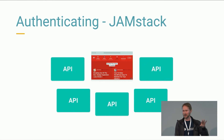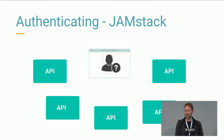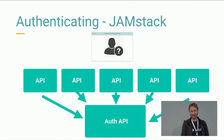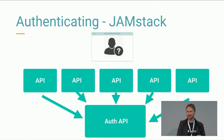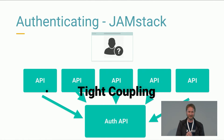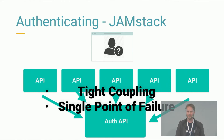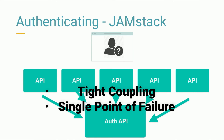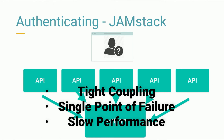The naive approach I've seen is to have all these APIs be aware of some central authentication API — you send your token to them, and each API talks back to the authentication API. But you end up with very tight coupling, where all APIs need to know about each other and about that specific authentication service. This creates a single point of failure: if your authentication service is down, all your APIs stop working. And for performance, at best it's similar to a database lookup on every request.